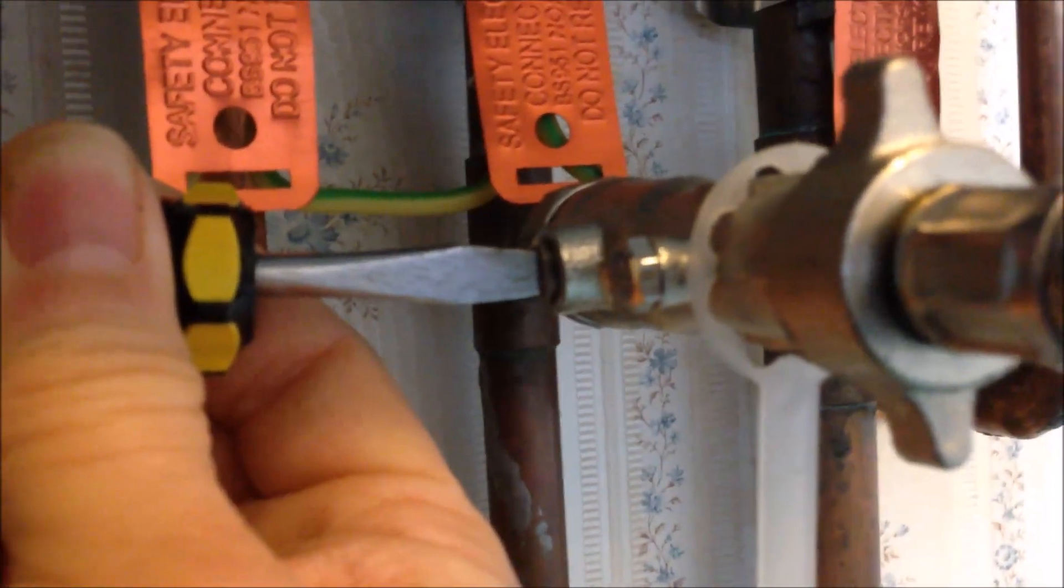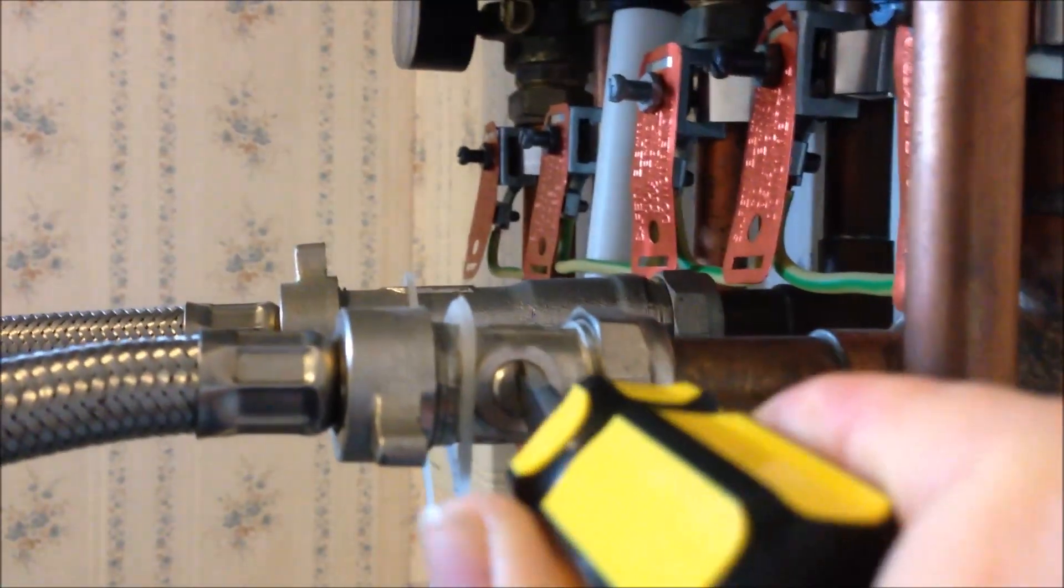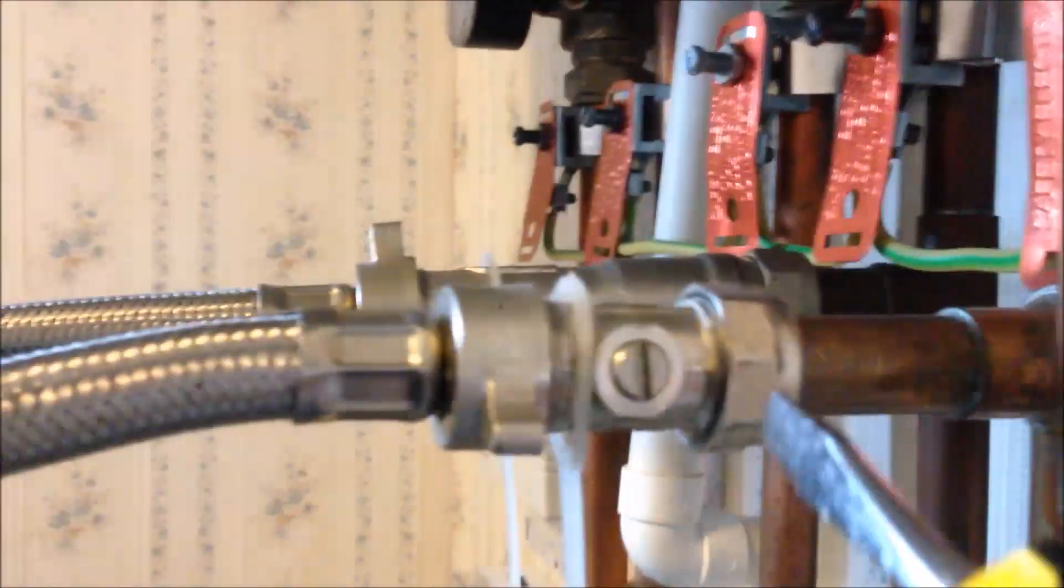So after you finish topping up water, turn this valve off, turn this valve off by turning 90 degrees either direction for this one.